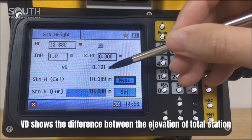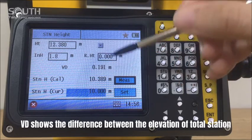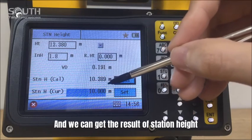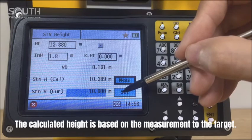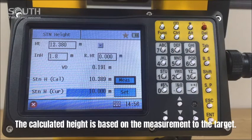VD shows the difference between the elevation of the total station based on the target. And we can get the result of station height which has been computed. The calculated height is based on the measurements to the target point.